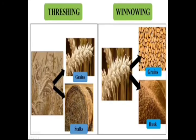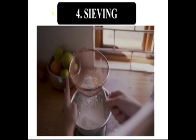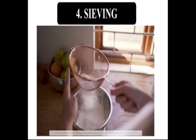Let's compare threshing and winnowing. If you want to separate grain from stalks, threshing is done — winnowing is not possible here. In the case of winnowing, you want to separate grain from husk. Also note that the stalk is a useful component, while husk is not. For winnowing, wind or blowing air is required; for threshing, either a threshing machine or a hard surface is used to beat the grains.